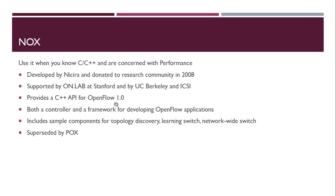Knox provides a standard C++ API for OpenFlow 1.0. The current version of OpenFlow at the time of recording is OpenFlow 1.3, so Knox is somewhat deprecated now. It provides a controller and framework for developing OpenFlow applications. If you are concerned with application development and are good at C++, Knox is the choice. It includes sample components for topology discovery, learning switch, and network-wide switch, and has been superseded by Pox.